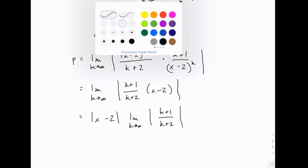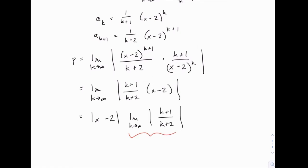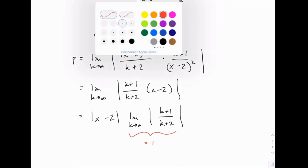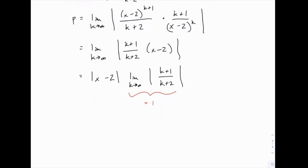So now all we need to do is evaluate this limit and notice that thinking back to your calc 1 or even precalc days, as k goes to infinity, the numerator and denominator are growing at the same rate because the powers of k are the same, and so this actually simplifies to that ratio of leading coefficients, which is just 1. So it turns out that that simplifies nicely, and p just equals the absolute value of (x minus 2).